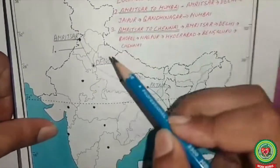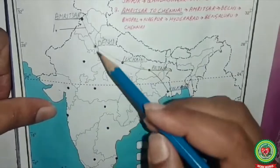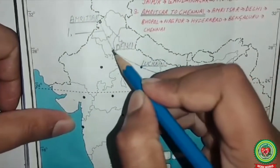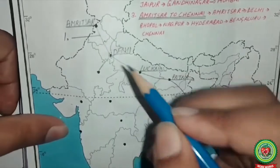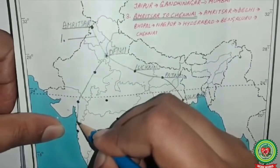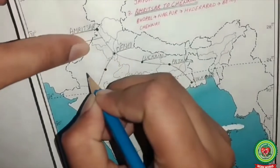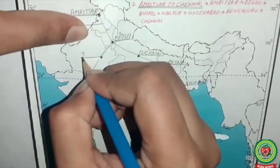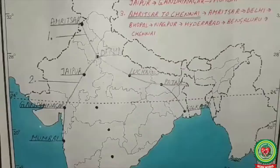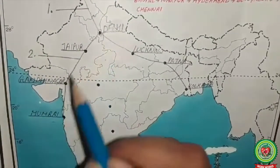Now let's go to Mumbai. Note that the route from Amritsar to Delhi will be the same for each route, whether going east, west, or south. For Mumbai, the route is: Amritsar to Delhi, then Jaipur — capital of Rajasthan, then Gandhinagar — capital of Gujarat, and then Mumbai — capital of Maharashtra. Draw a line and write Jaipur, then mark Gandhinagar and Mumbai. Mark this as route number two.